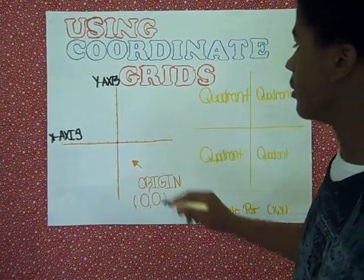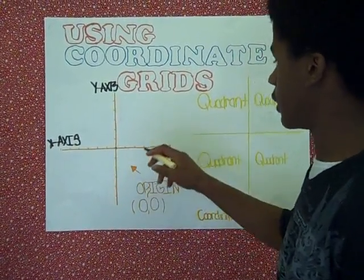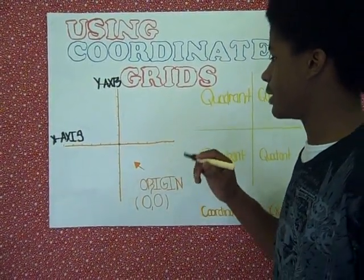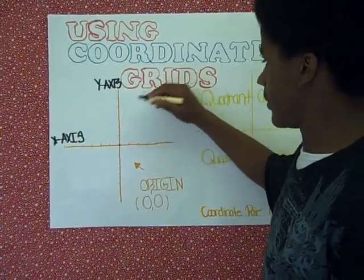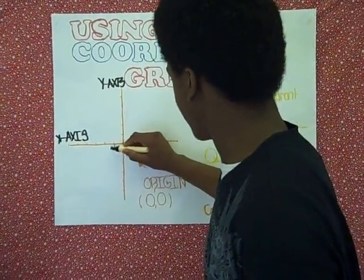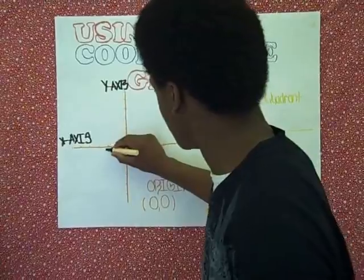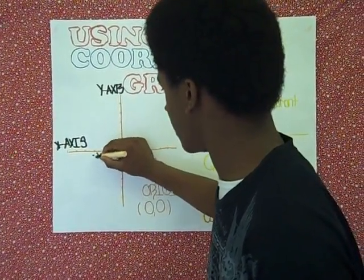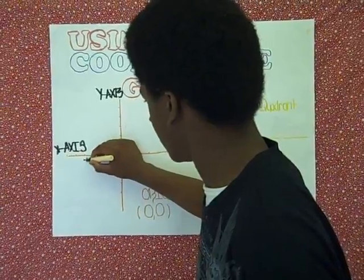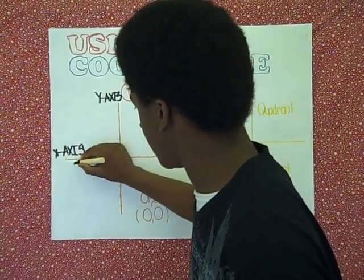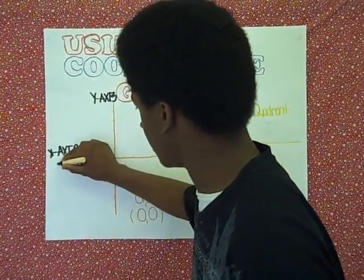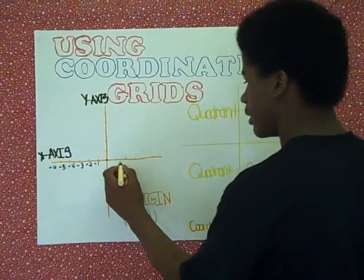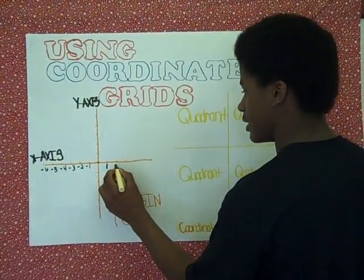Now I am going to show you how to label the negative and positive numbers on the coordinate grid. I am also going to show you where to place the origin on the coordinate grid, which is also known as zero. This will be negative 1, negative 2, negative 3, negative 4, negative 5, and negative 6.